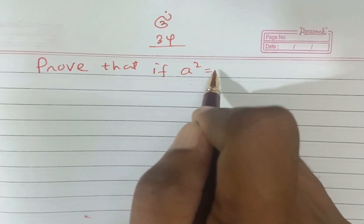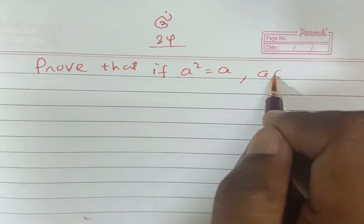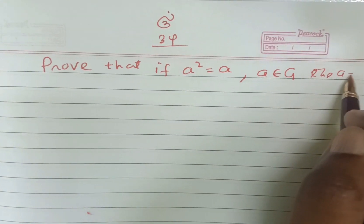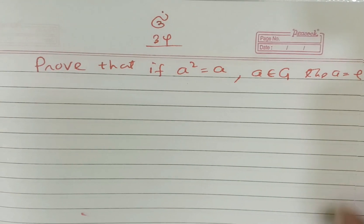Prove that if a square is equal to a, where a is an element of group G, then a is equal to e. We have been asked to prove this.